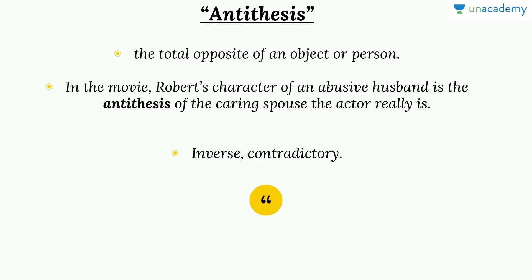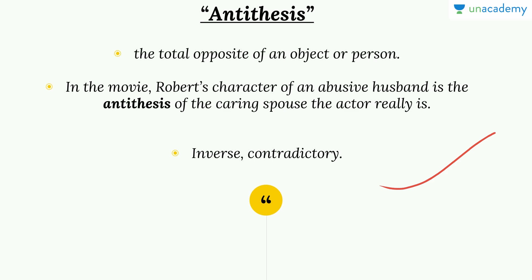The next word is antithesis. Antithesis is the total opposite of an object or person — contradictory. In the movie, Robert's character of abusive husband is the antithesis of the caring spouse the actor really is. He is shown as an abusive husband, which is completely contradictory to his actual nature. The synonyms are inverse and contradictory.